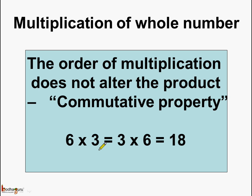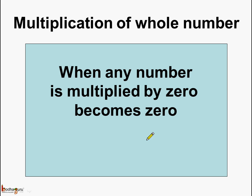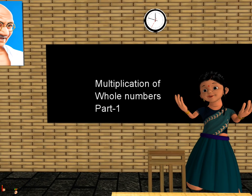Even if we change the order of multiplication, the product is always the same. Lastly, when any number is multiplied by 0, the product is 0. For example, 3 multiplied by 0 is equal to 0. So now we know 3 properties related to multiplication of whole numbers. The other properties we will see in the next class.